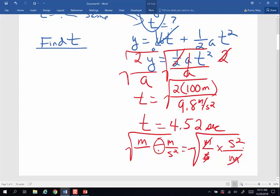The square root of second squared is seconds. I'm looking for time. I've got time. Life is good.